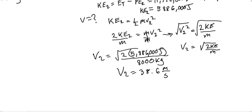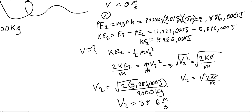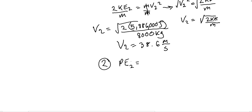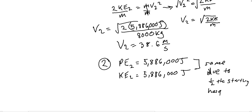To neatly summarize position 2: the potential energy at 2 is equal to 5,886,000 joules, and the kinetic energy at 2 is also 5,886,000 joules — this is the only case where they are the same, due to it being half the starting height. And the velocity at 2 is equal to 38.6 meters per second.